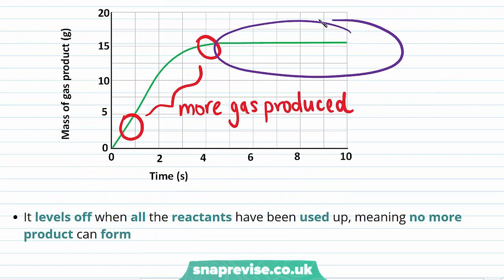The graph also shows a region in which it levels off, which can be seen here. This happens when all the reactants have been used up, meaning that no more product can form, and the reaction stops.